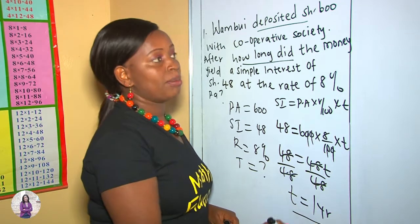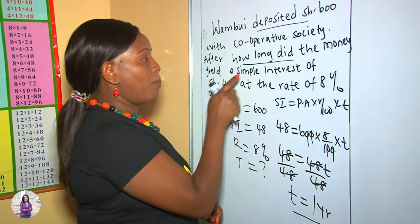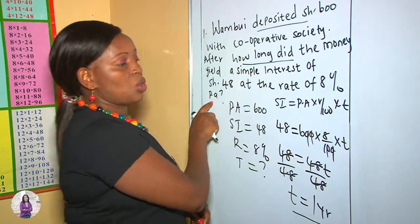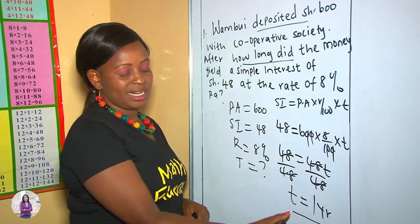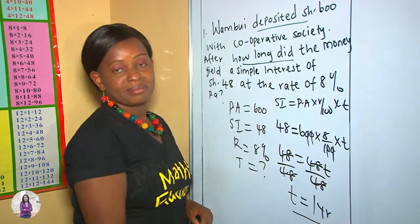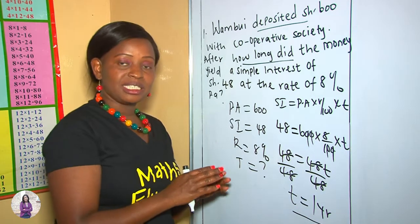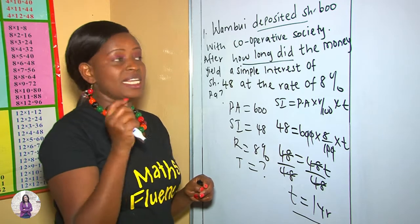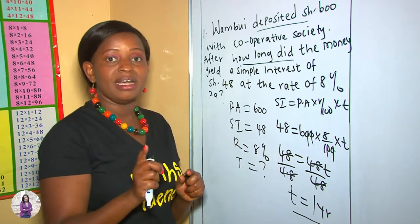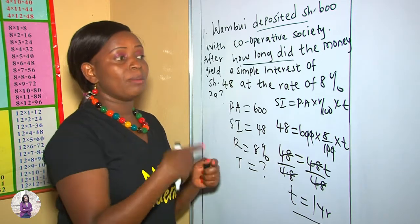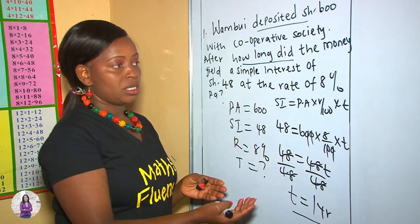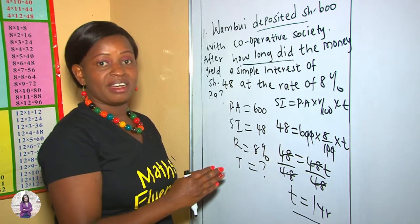Our time is 1, which is 1 year — we say 1 year because of per annum, meaning on a yearly basis. So our answer is 1 year. This means the money stayed in the cooperative society for 1 year before being withdrawn.